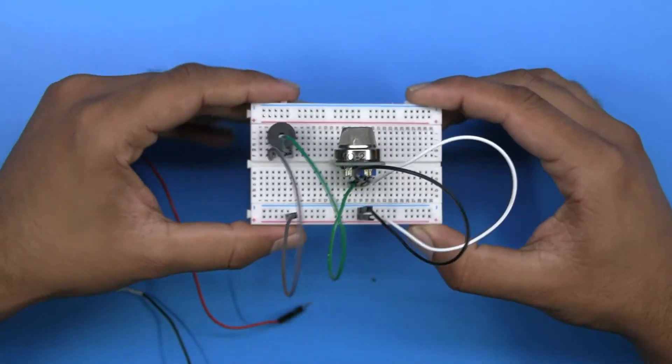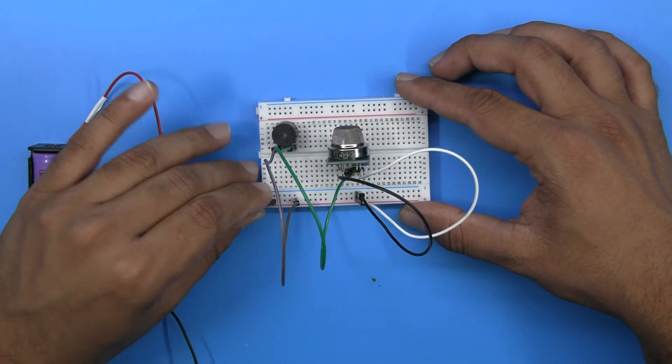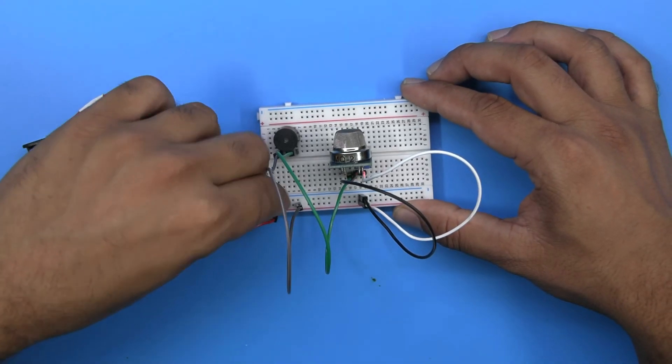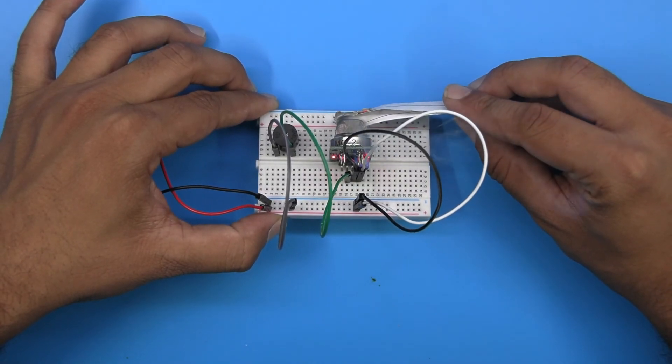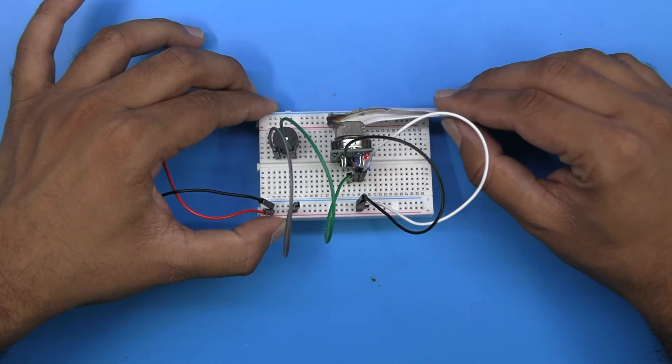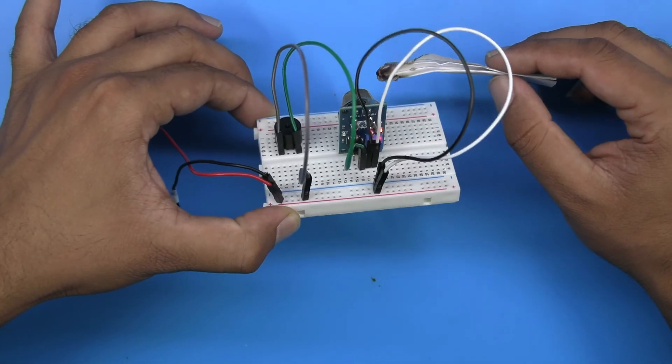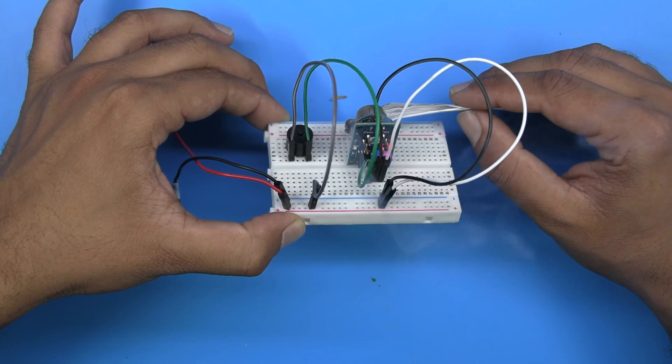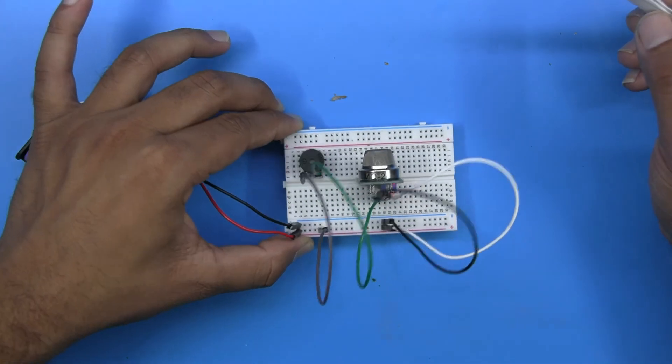Now connect the battery to the breadboard and let's see what happens when sensor comes near smoke. Our circuit works absolutely fine. You can see the buzzer starts beeping as soon as sensor senses smoke.